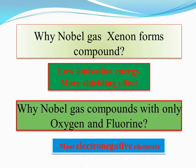Even though xenon has a stable electronic configuration (ns2 np6) and high ionization energy, ionization energy decreases down the group. Because xenon has low ionization energy and a large size causing more shielding effect, the shielding effect does not control all electrons effectively, so xenon can undergo chemical reactions. These two reasons — low ionization energy and more shielding effect — explain why xenon forms compounds.